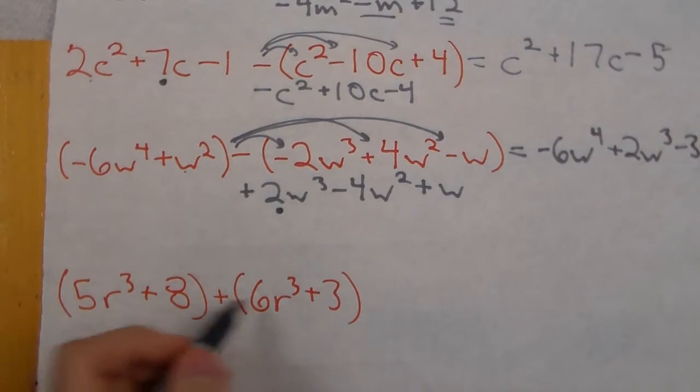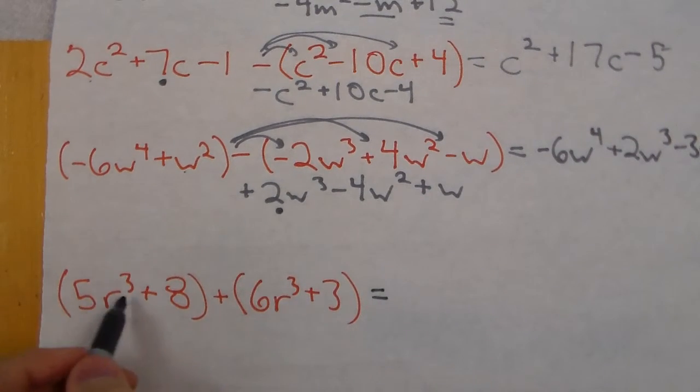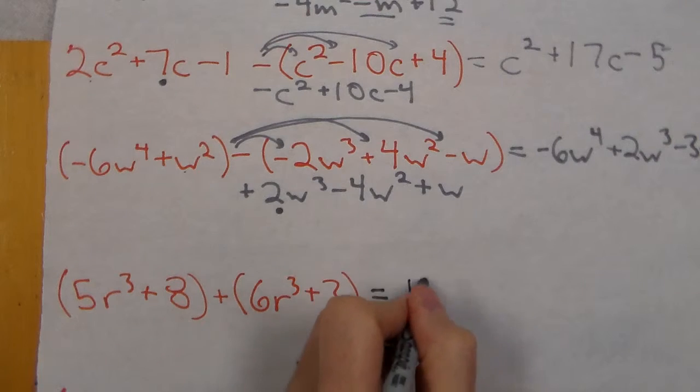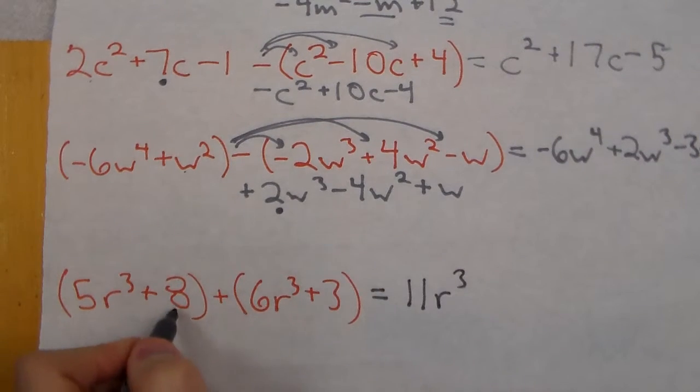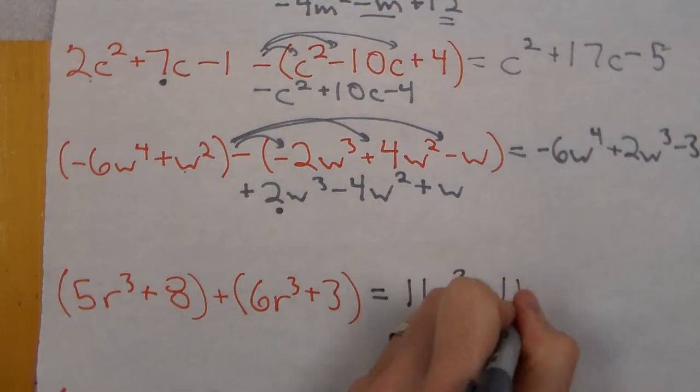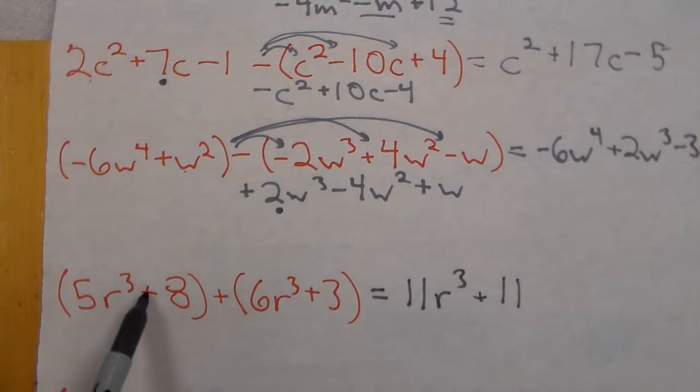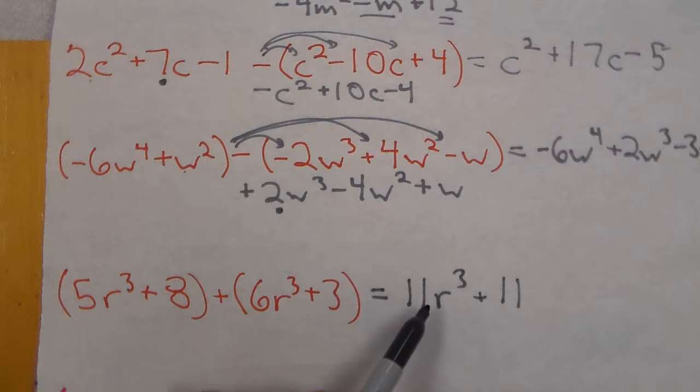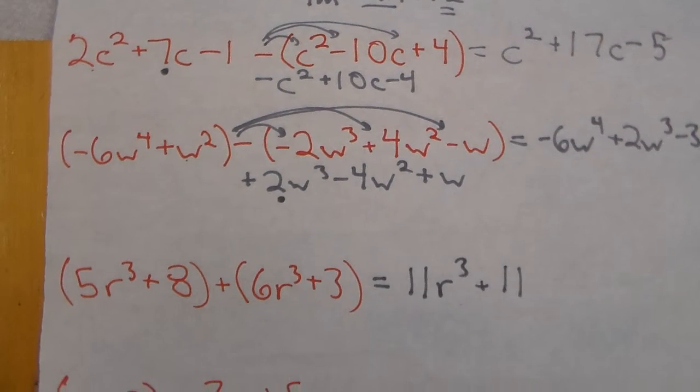Okay for our next one it's not subtraction. We're just going to combine the like terms. We have 5r³ and 6r³ is 11r³. And 8 and 3 comes out to be 11 as well. Now notice I'm not changing the power of r³. I'm just adding them. It's not multiplication. If it was multiplication 5r³ times 6r³ like we did in the last unit that would be something different. Combine the terms. Leave the exponents the same.